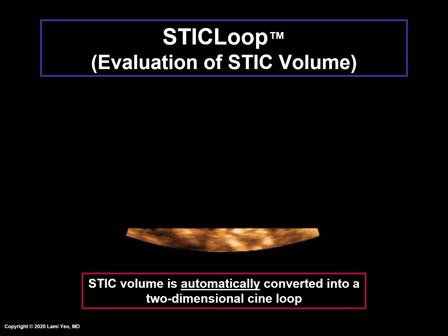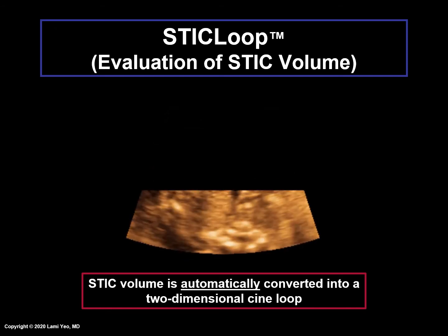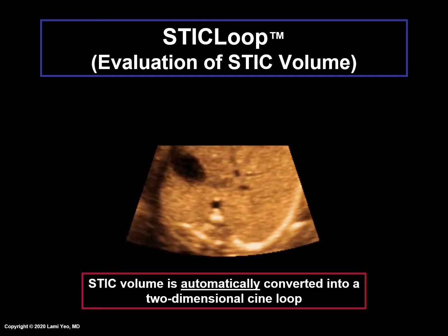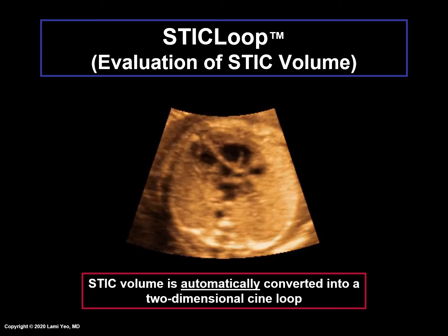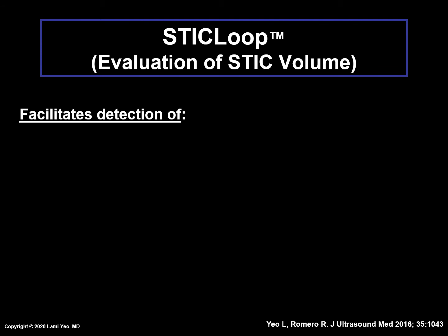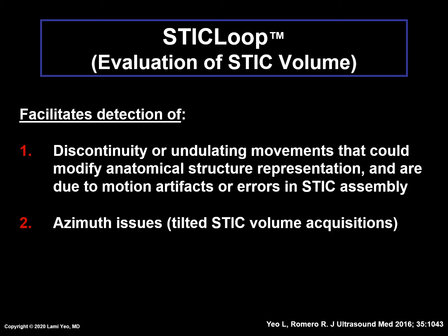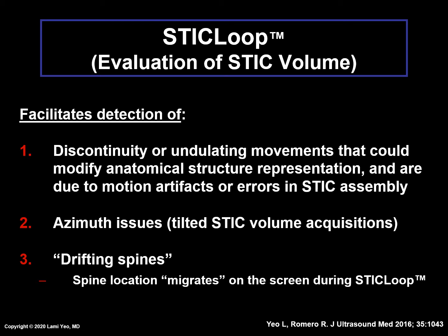Once a STIC volume has been acquired, the system will automatically convert the volume into a two-dimensional CINE loop that scrolls in a continuous fashion — this is why it is called STICLOOP. With STICLOOP, the image on the screen begins with the initial frame obtained by the transducer, and automatic scrolling through all the frames occurs until the last frame acquired in the sweep is reached. STICLOOP facilitates detection of the following: discontinuity or undulating movements due to motion artifacts or errors in STIC assembly; azimuth issues or tilted STIC volume acquisitions; and the concept of drifting spines, defined as when the spine location migrates on the screen during STICLOOP. This will be discussed in a future lecture.